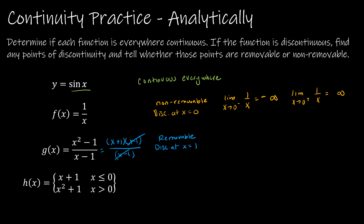If it doesn't cancel — say just for illustration I also had an x minus 2 in the denominator, making it discontinuous at x equals 1 and x equals 2 — that x minus 2 doesn't cancel with anything in the numerator, and therefore that would be an asymptote, which is non-removable. But in our original function, the factor cancels, so it's a removable discontinuity at x equals 1.